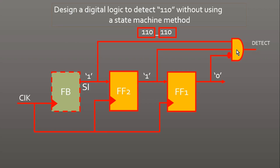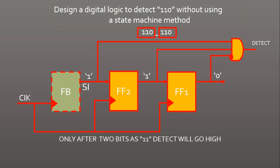The question arises: where is the complexity? It seems very simple. The problem occurs when detecting 110 — there was no issue when detecting 101 in the previous question. The remedy involves understanding what happens at startup. Let us say the reset value of all flops is zero, so the output of flip-flop 1 is zero and flip-flop 2 is zero.